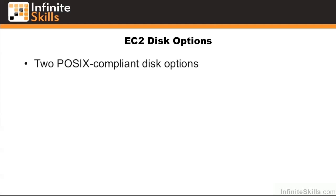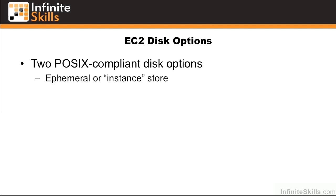In this chapter, we covered the two POSIX-compliant disk options: ephemeral, or instance store, which is local disk, and EBS, which is network-attached storage.